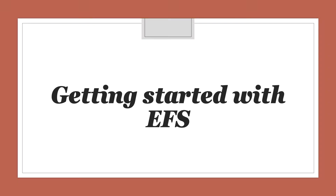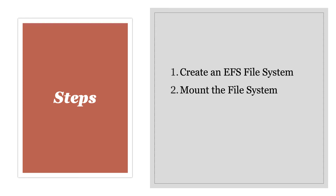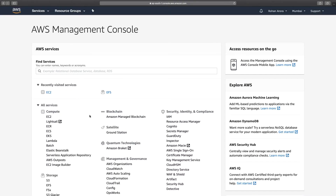Now we'll see the step-by-step process to use this service. There are four steps we'll perform on the management console: first we'll create an EFS file system, then we'll mount the file system on two Linux instances, then we'll test it, and finally we'll clean up. Let's jump over to the management console and see how you can create an EFS file system and share it among two Amazon Linux instances.